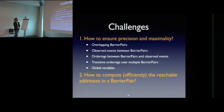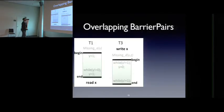However, in order to realize this barrier pair approach, there are two central challenges. Both of them are very challenging. The first one is how to ensure precision and maximality. And there are many corner cases you have to consider. The other one is you have to compute these reachable addresses. And how to compute them safely and efficiently. Let me try to give you a small example to convince you this is a hard problem.